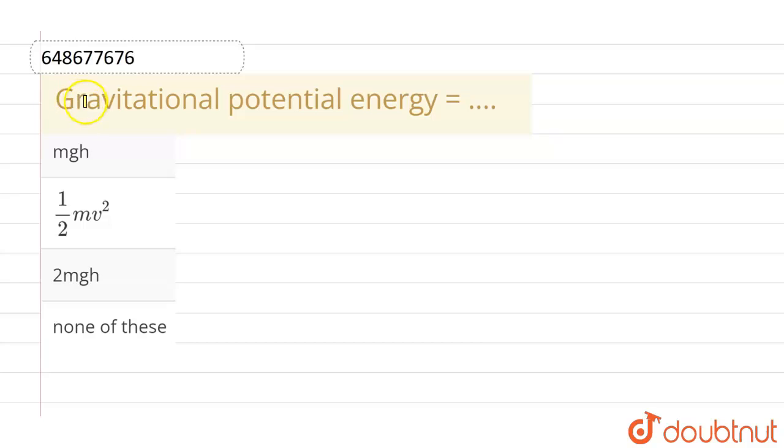Hello everyone. If we talk about this question, gravitational potential energy equals, and the given options are: mgh, the second option is half mv square, the third option is two times mgh, and the last given option is none of these.